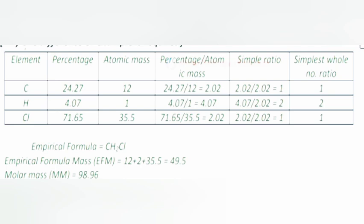So the simple ratio is 1 and the simplest whole number ratio is 1. By doing this way, we get: percentage of hydrogen is 4.07, atomic mass 1, relative number of atoms 4.07, simple ratio 2.02, simplest whole number ratio 2. And percentage of chlorine 71.65, atomic mass 35.5, relative number of atoms 2.02, simple ratio 1, simplest whole number ratio 1.